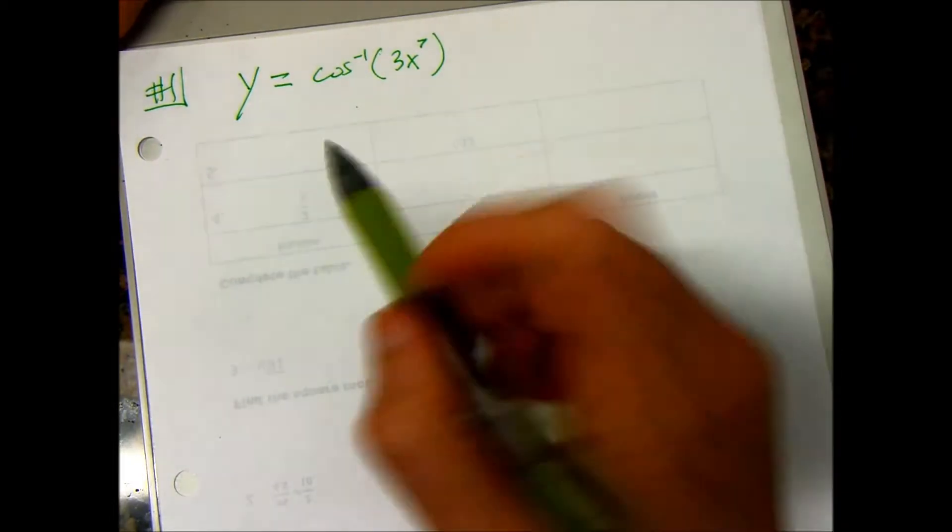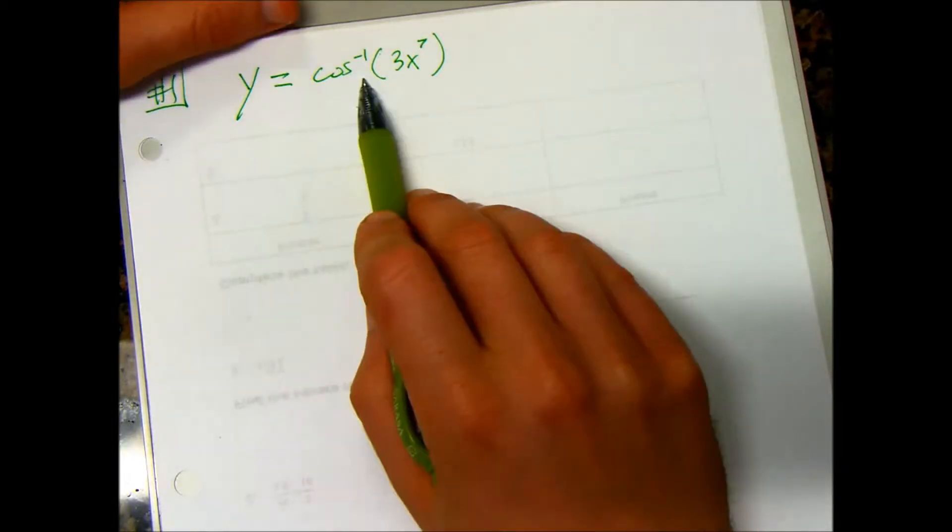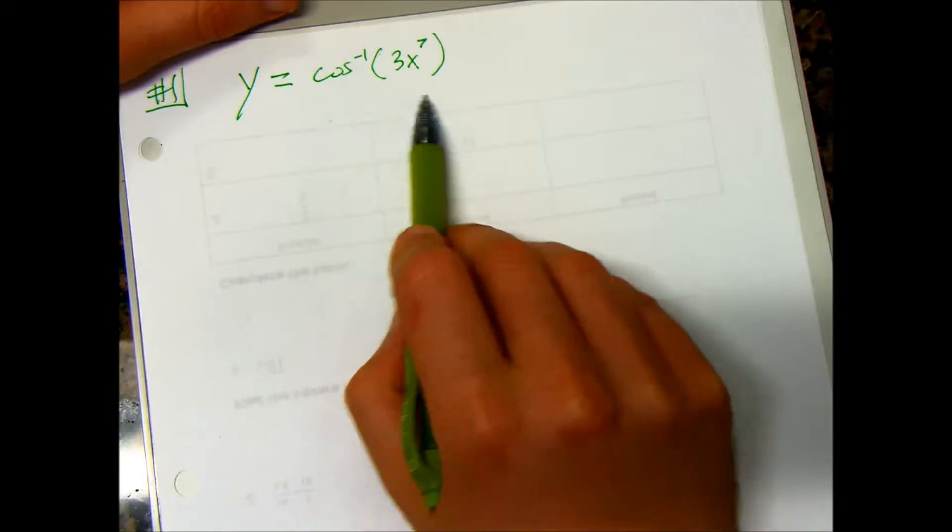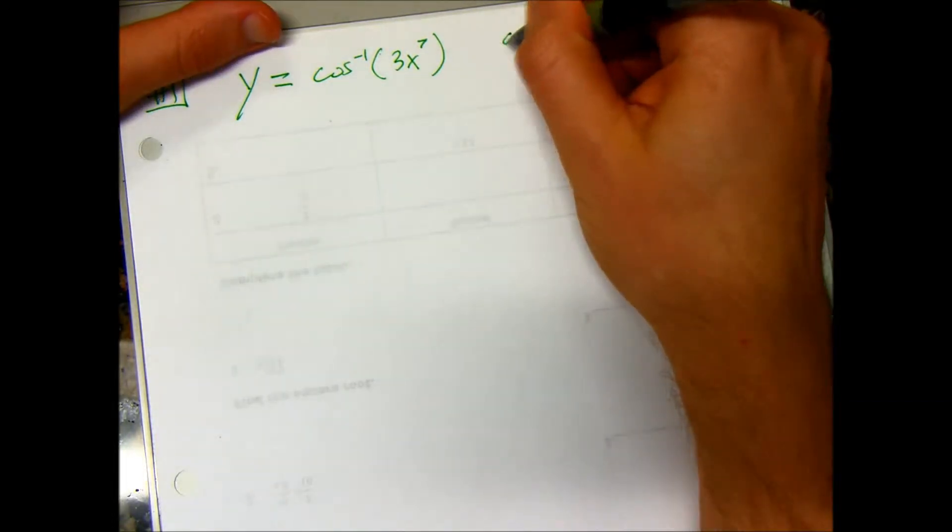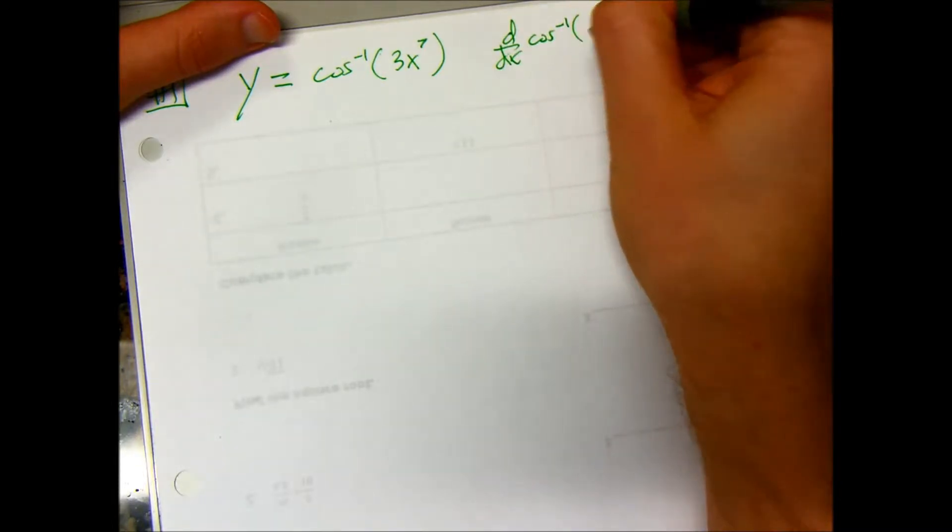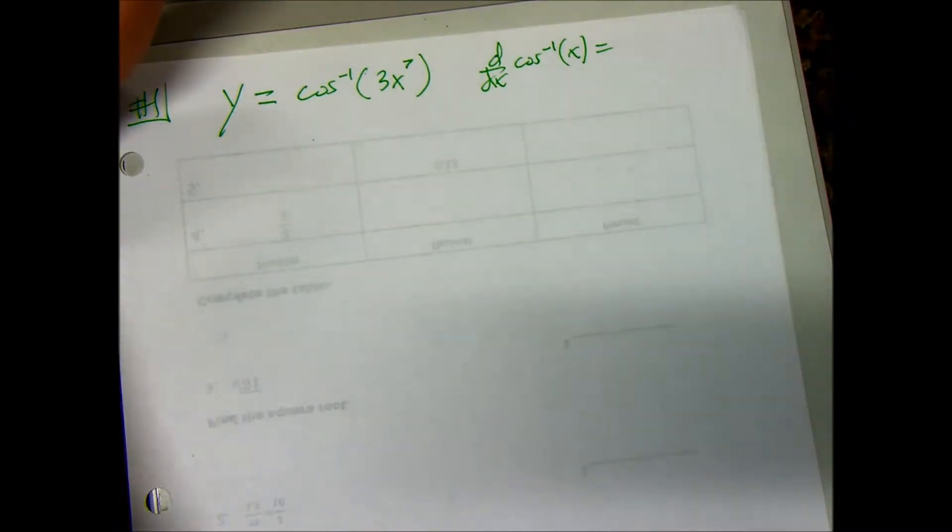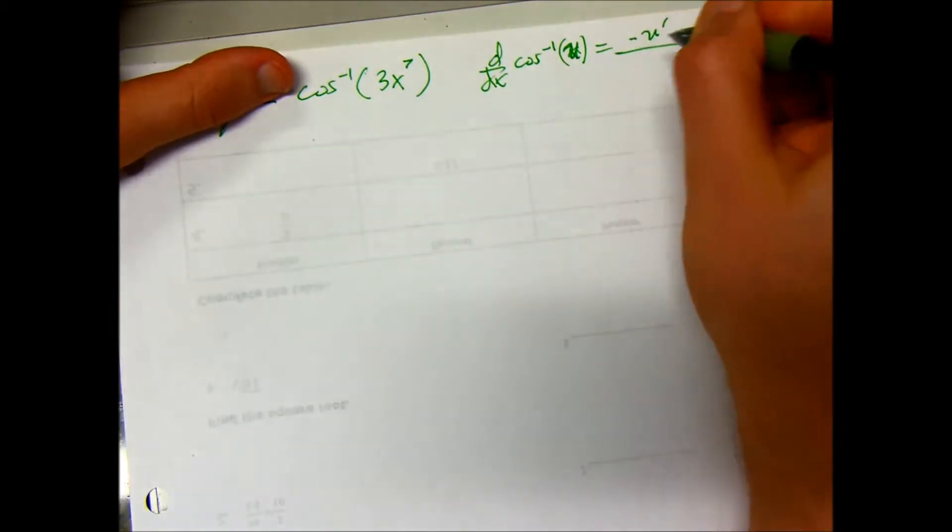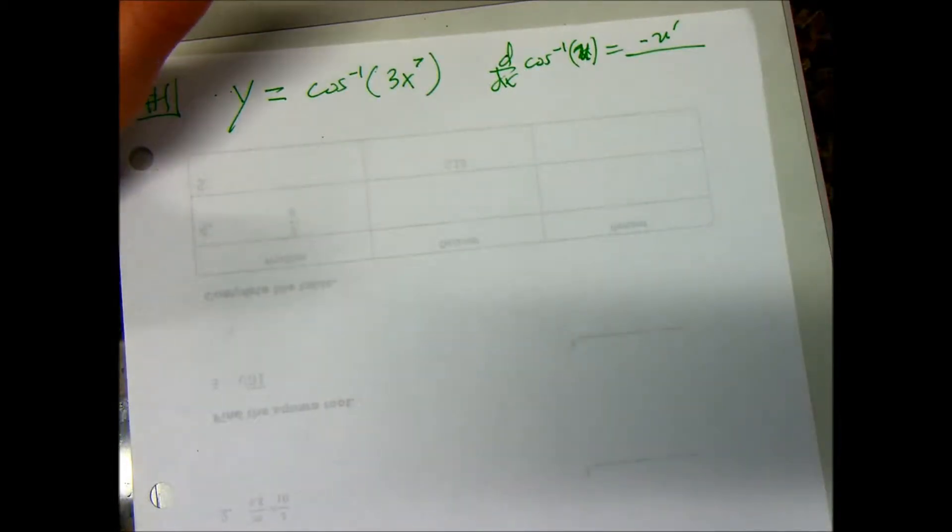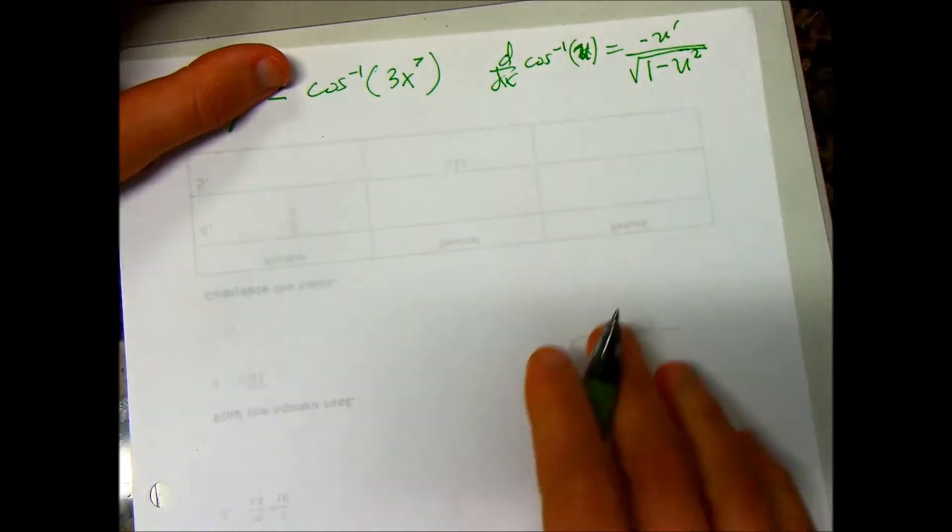One of the problems that we have to do, this is like numbers 1, 2, 3, and 4. They need you to find the derivative of this inverse trig function, cosine, right? So, let's write down our formula for cosine inverse, d/dx cosine inverse of x, or just remember what it is. You have your formula sheet. It's negative u prime over the square root of 1 minus u squared.